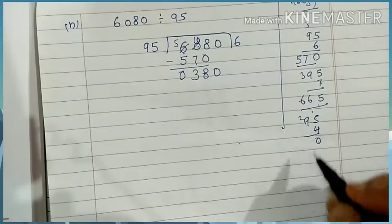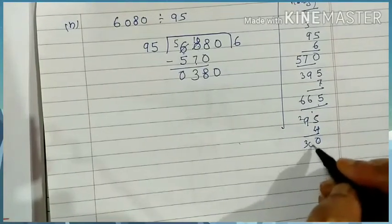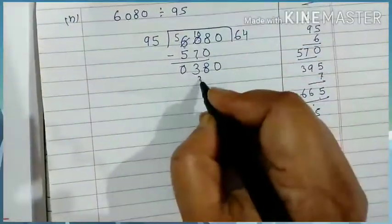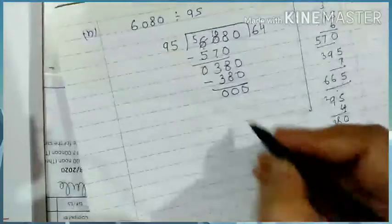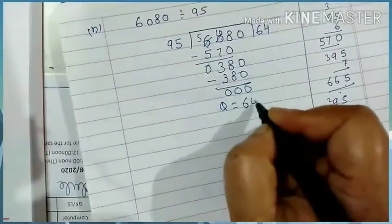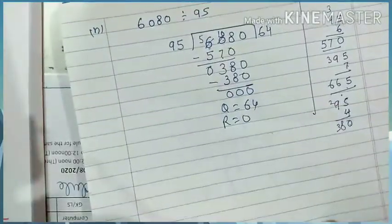Nine fours are thirty six, thirty seven, thirty eight. So it will be four times. So my answer will be, quotient is sixty four, reminder is zero. This way we will do seven exercise, the same way we will do.